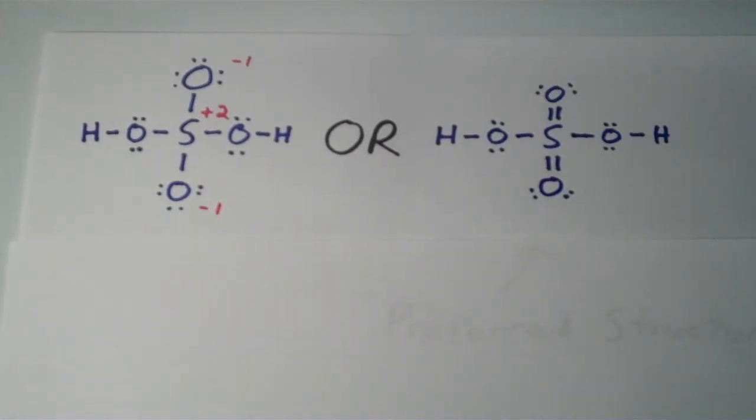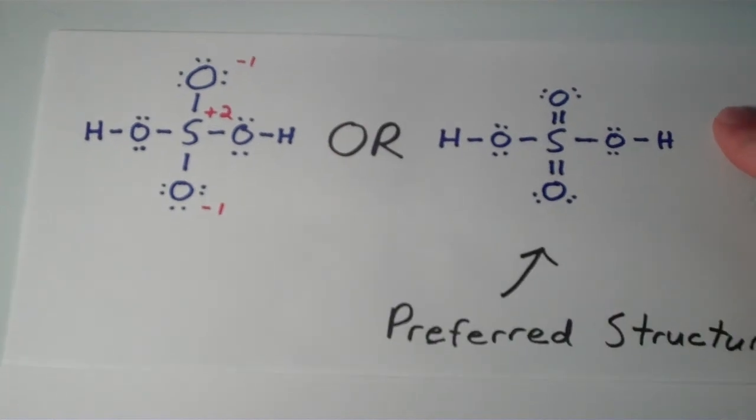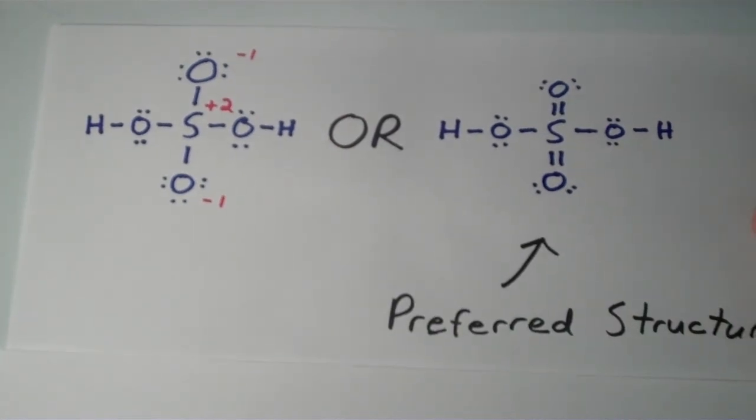Experiments have shown that the sulfur oxygen bond lengths with the oxygens that do not have hydrogens are short and more closely resemble sulfur oxygen double bonds than sulfur oxygen single bonds. So therefore, the structure on the right is the preferred structure.